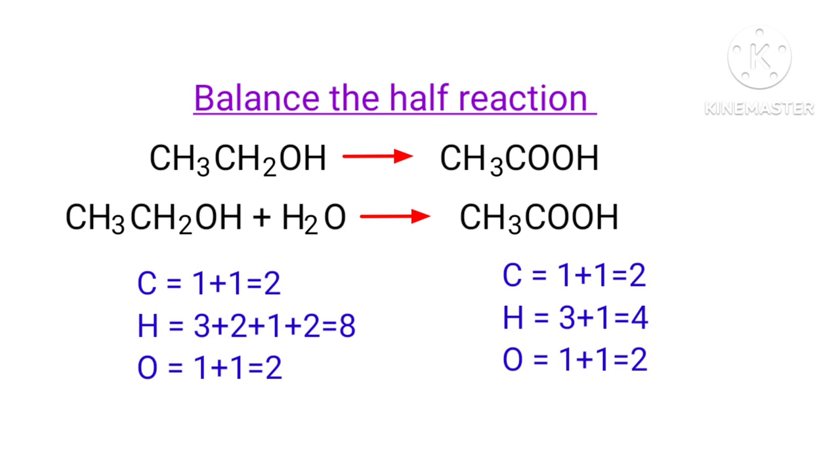Now we can balance the hydrogen atoms. To do this, we can produce H plus ions. Now the number of atoms are balanced on both sides.